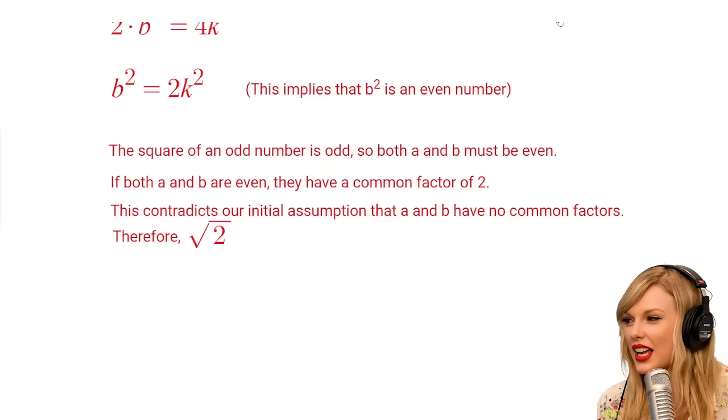Since our assumption led to a contradiction, we can conclude that the square root of 2 cannot be expressed as a fraction in its simplest form, and therefore, it is irrational. Q.E.D.